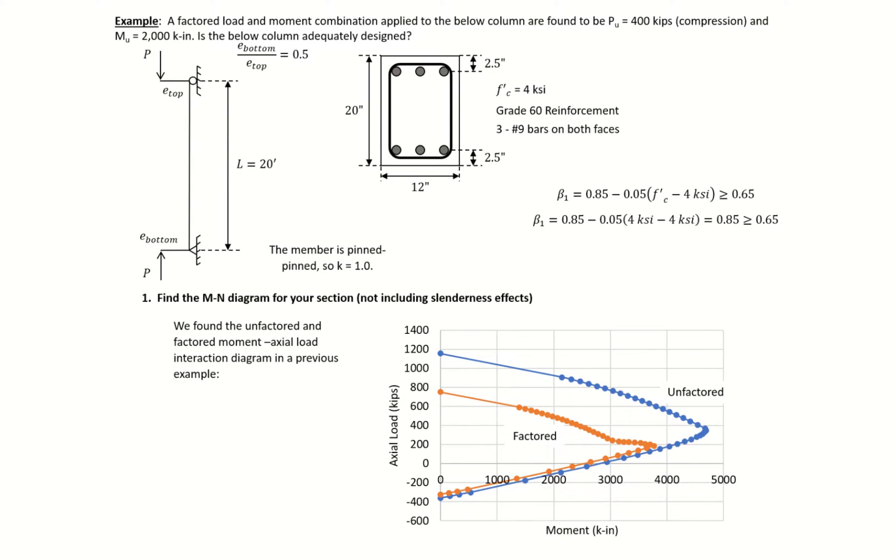In this example problem we have a factored load and moment combination applied to the beam column found to be P_u equals 400 kips compression and M_u equals 2000 kip-inches.